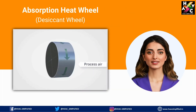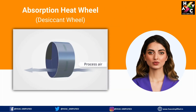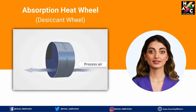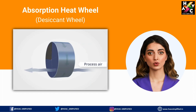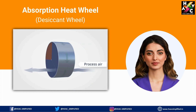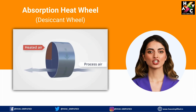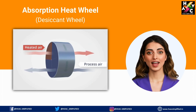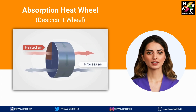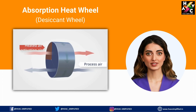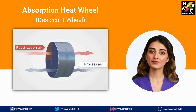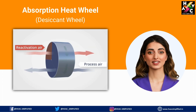Here's how it works. Humid air passes through the wheel, where the desiccant absorbs moisture. This moisture is then transferred to a heated air stream, which dries the desiccant for reuse, ensuring effective dehumidification.